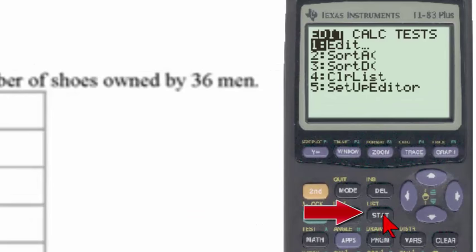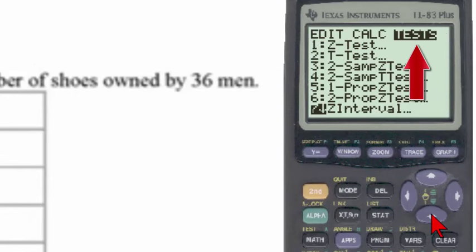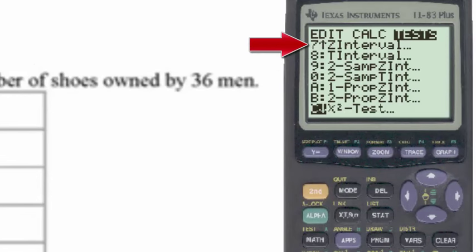Going to the STAT button, and then to the TEST menu, and scrolling down the list until the z interval, number 7, is at the top of the list, we see that number 8 is the t interval.